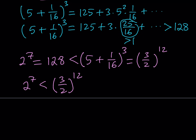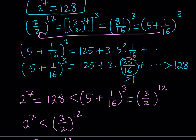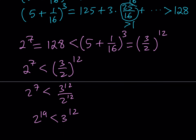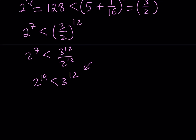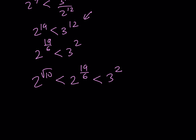Let's multiply both sides by 2 to the power of 12. First expand: we get 3 to the 12th over 2 to the 12th. Now multiply both sides by 2 to the power of 12, and that gives you 2 to the power of 19 is less than 3 to the power of 12. I know that 2 to the power of square root of 10 is less than 2 to the power of 19 over 6, but how do I relate it to 3 to the second power? I need 3 to the second power, so I divide both exponents by 6. This gives me 2 to the power of 19 over 6 is less than 3 to the power of 12 over 6, which equals 2. So 2 to the power of 19 over 6 is less than 3 squared, and combined with the earlier result, 2 to the power of root 10 is less than 2 to the power of 19 over 6, which is less than 3 squared.